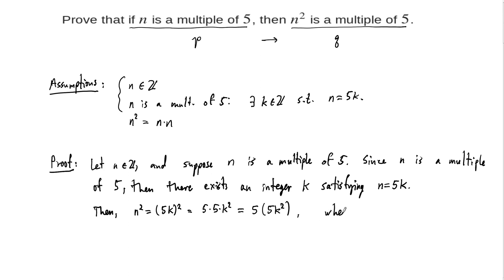And in this case, this number 5k squared is an integer. We don't need to get too deep into that, but k is an integer, 5 is an integer, and the product of integers are again integers. So this 5k squared is an integer, and therefore,